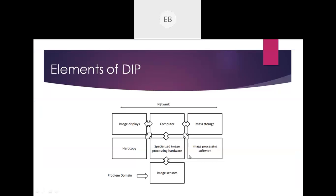In this figure you can see certain elements of digital image processing, which are totally different from yesterday's topics. Here you can see we have a problem domain, then sensors, software, storage, displays, hard copy, hardware, and computer, and finally this is allocated to a network. Problem domain means a problem a user faces at any step in image processing on a specific field, covering all these elements.